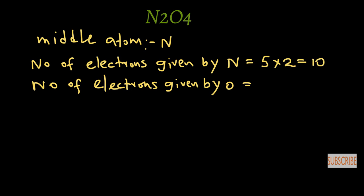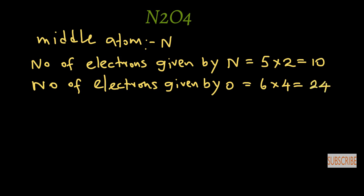Now consider the number of electrons given by oxygen. Oxygen is a group 6 element, so oxygen gives 6 electrons. There are 4 oxygen atoms, so oxygen gives a total of 24 electrons.